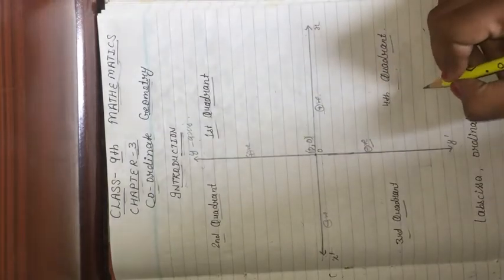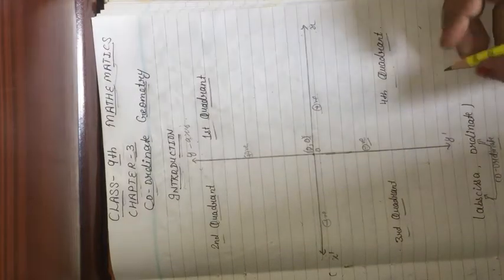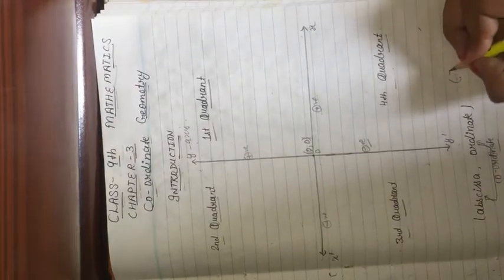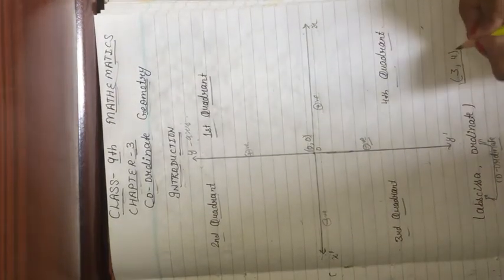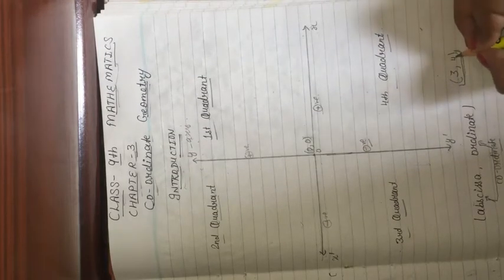Next, we have the x-axis and y-axis with both values. The value on the x-axis is called the abscissa, and the value on the y-axis is called the ordinate. Together, the two values form a coordinate. For example, if x value is 3 and y value is 4, then abscissa is 3 and ordinate is 4. What is the complete coordinate? The coordinate is written as (3, 4).